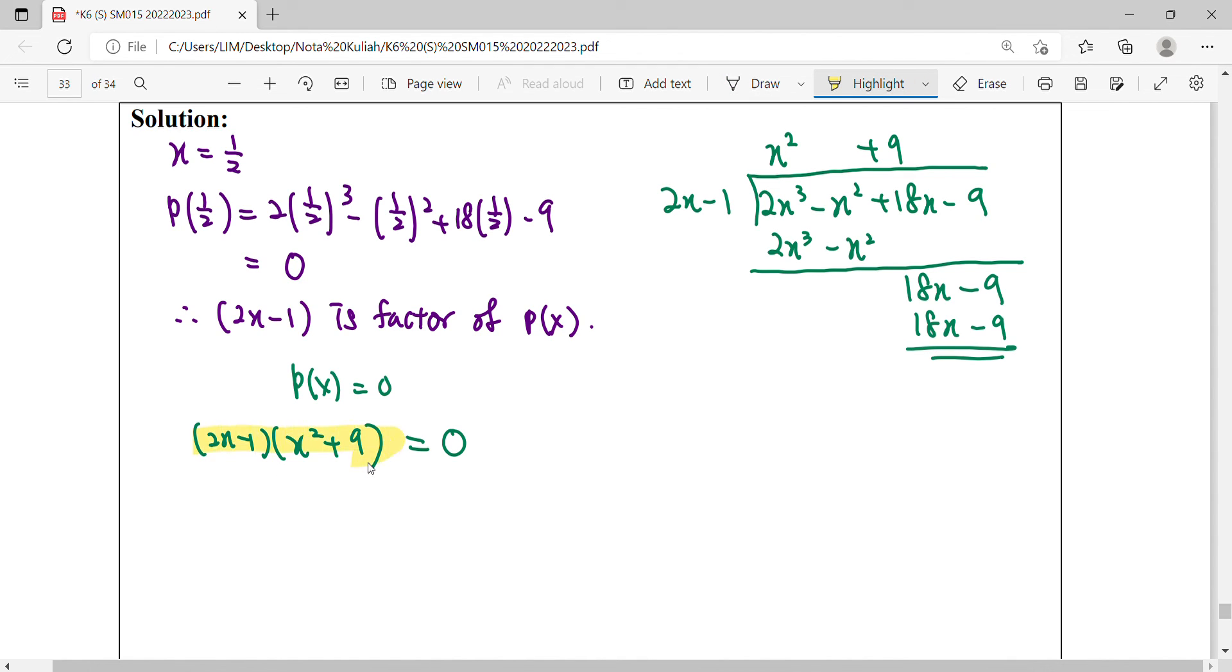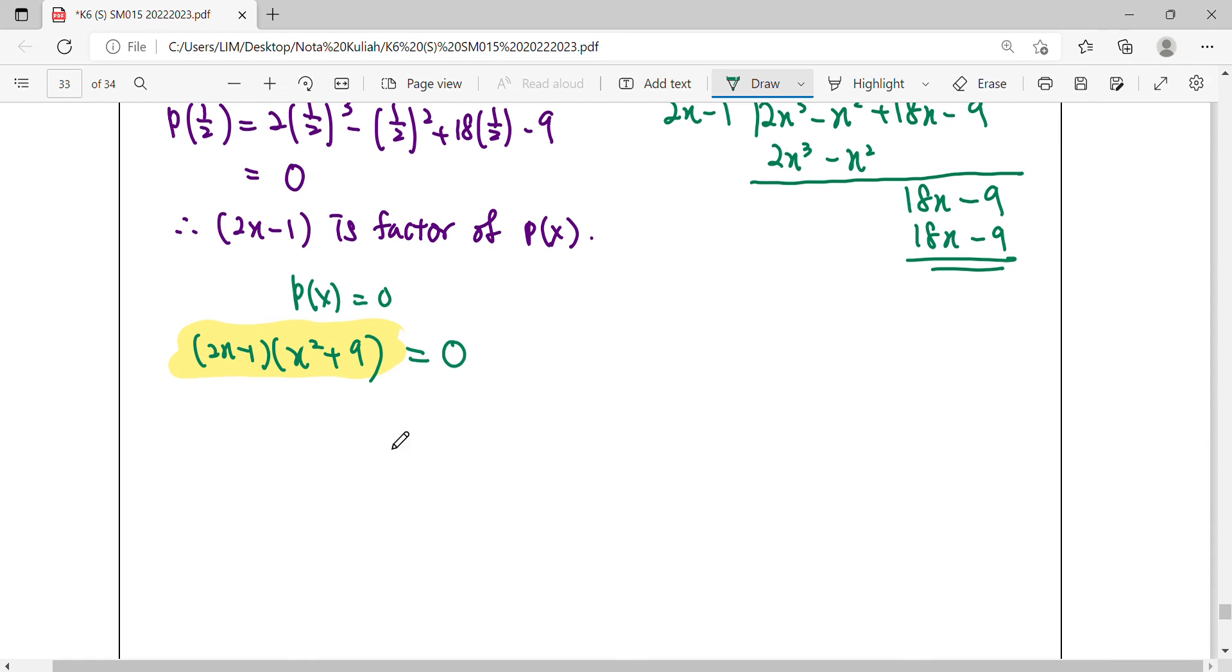Then we can proceed to solve, meaning find x. This will be 2x minus 1 equals to 0, so x equals 1 over 2. From here, x squared will equal negative 9.